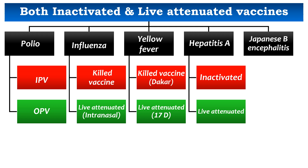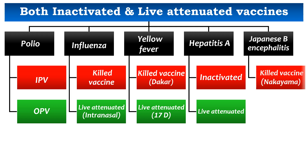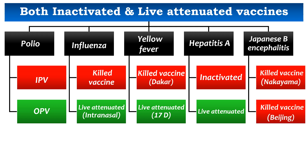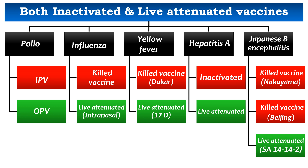Against Japanese B Encephalitis, we have two killed vaccines: the first developed from the Nakayama strain and the second from the Beijing strain. Both are mouse brain-derived and formalin-inactivated, prepared at the Central Research Institute, Kasauli, in India. The live attenuated vaccine is developed from the SA14-14-2 strain, prepared from primary hamster kidney cell lines, and given to children aged 1 to 15 years.